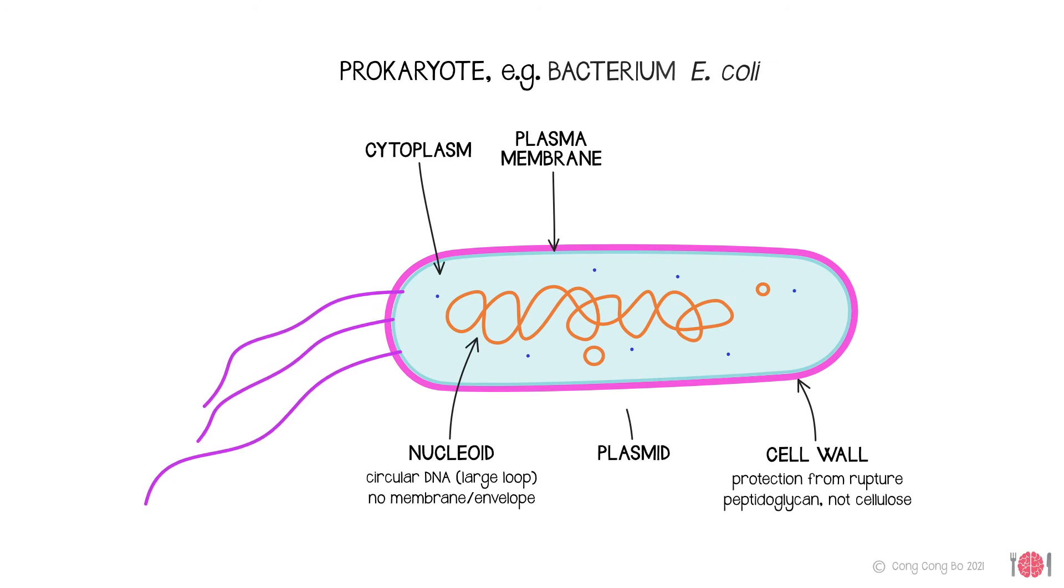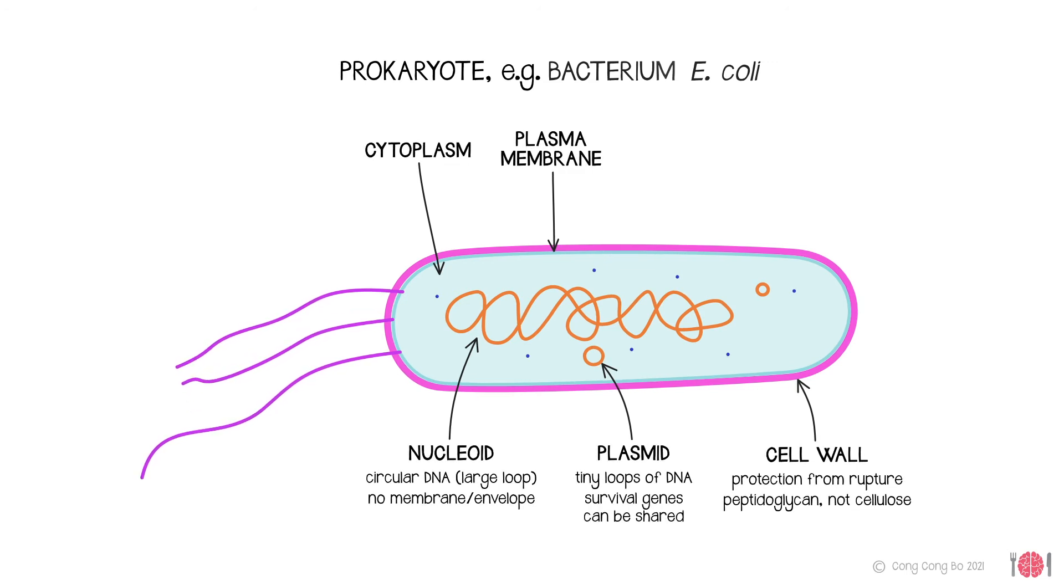In addition, it has plasmids, tiny loops of DNA containing survival genes such as resistant genes to antibiotics, which it can replicate and pass on to other bacteria.